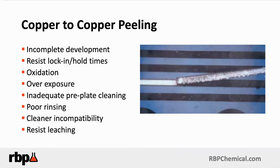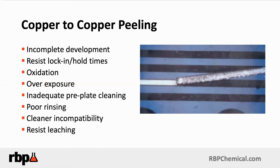Why do we have peeling? There are a number of factors, but the first job is to identify where the peeling is coming from. Is it the electrolytic copper peeling from the laminate, or is it the electrolytic copper peeling from the electroless? That's going to trigger a whole different mechanism for how you solve this problem. One of the first things to look at is inadequate cleaning — did you not clean the copper surface or do a good job of removing oxidation? Also consider poor overexposure of the photoresist, which may cause additional materials to lock into the copper surface, creating a barrier.